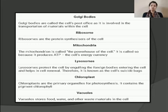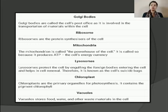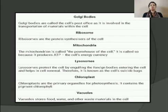Chloroplasts are the primary organelles for photosynthesis and consist of a pigment called chlorophyll. Vacuoles are organelles that store food, water, and other waste materials inside the cell, and when required they transport those materials out of or within the cells.